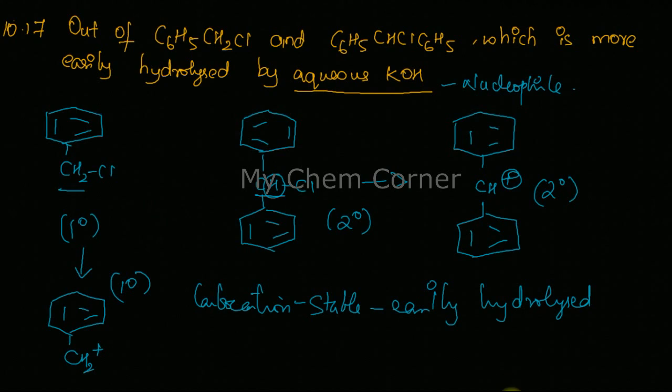So when we look at the stability of the carbocation, we know tertiary carbocations are highly stable, after that we have secondary carbocation, and after that primary carbocation. So here are the two types of carbocations - one is primary, the other is secondary. So obviously the secondary carbocation formed from this compound will get hydrolyzed very easily.